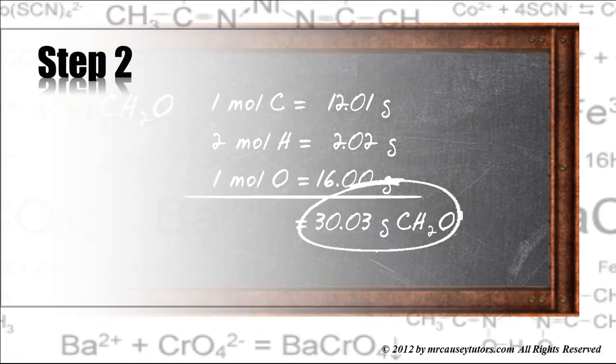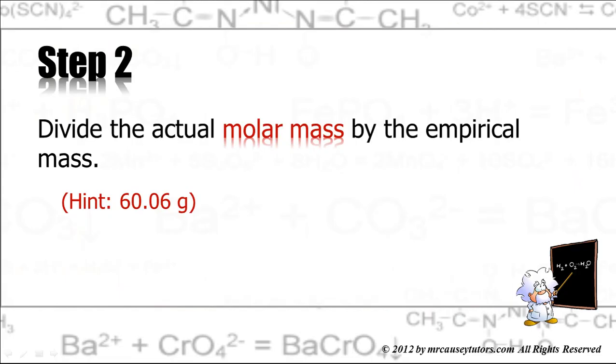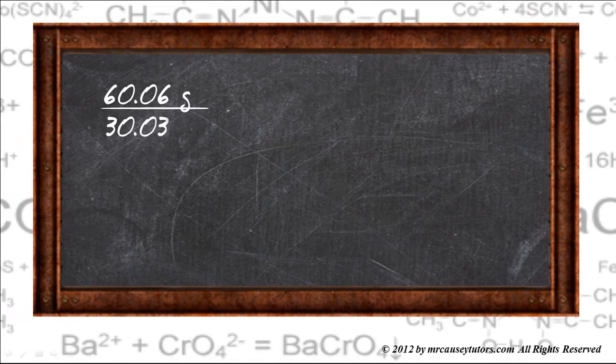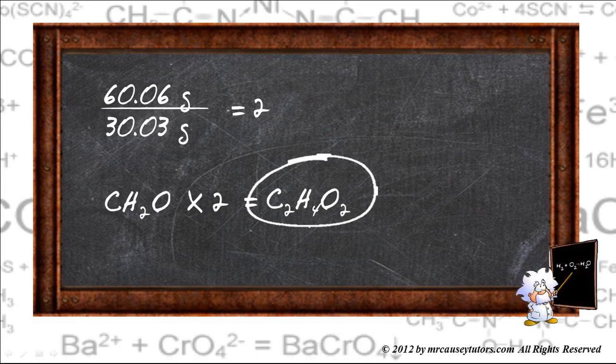Step two, divide the actual molar mass by the empirical formula. Now, remember the actual molar mass is 60.06 grams. 60.06 grams divided by 30.03 grams gives us a ratio of two. I wouldn't, I really don't mean a ratio. It gives us a value of two, which then tells us that everything in the empirical formula needs to be multiplied by two. And that should give us a C2H4O2. And we see that is our molecular formula.